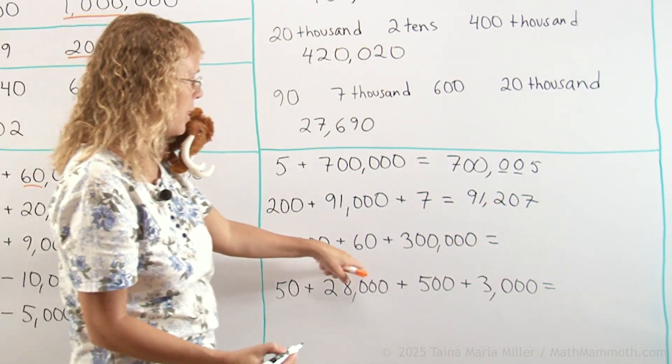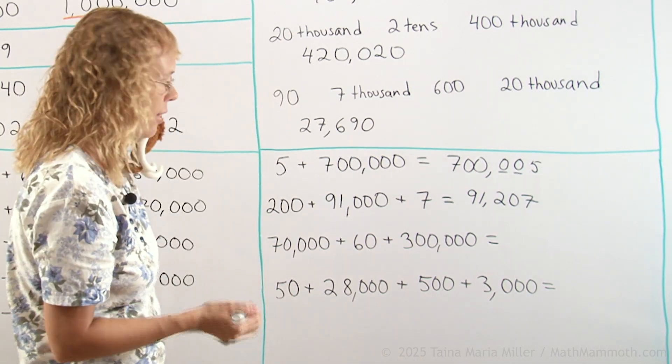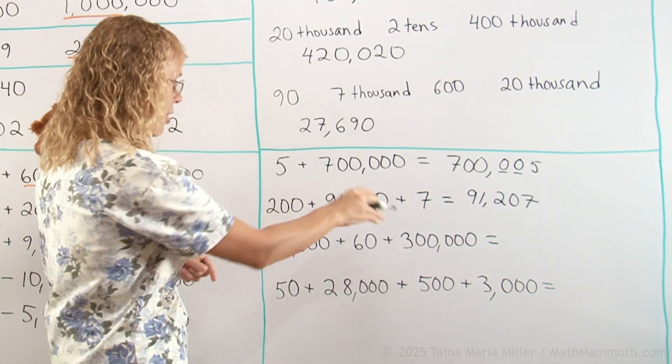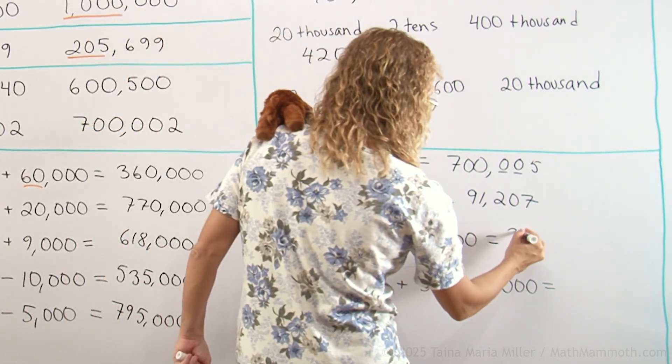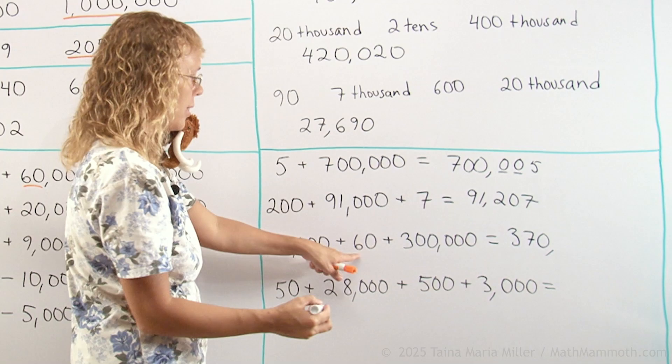Here's seventy-thousand plus sixty plus three-hundred-thousand. I'll add the thousands first. Three-hundred-and-seventy-thousand. Three-hundred-and-seventy-thousand. Then sixty.